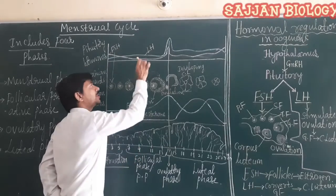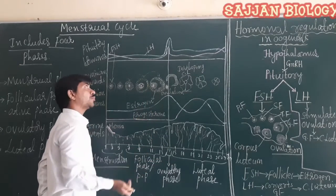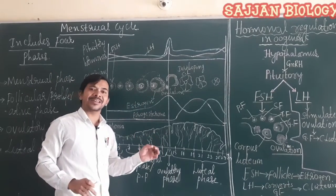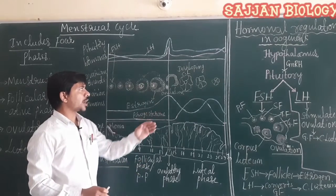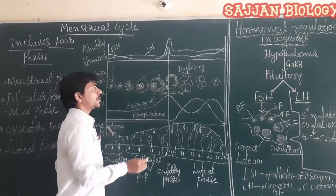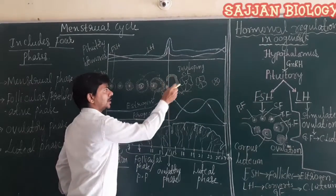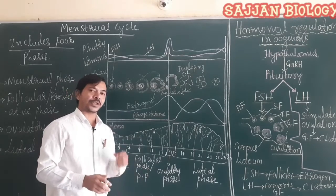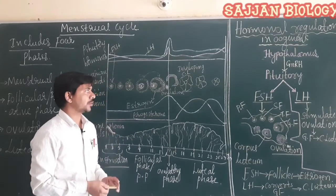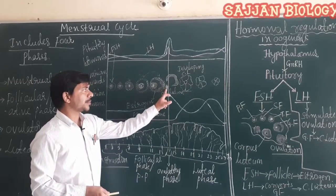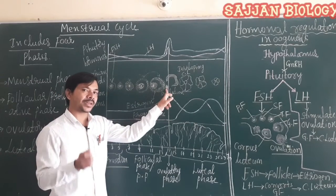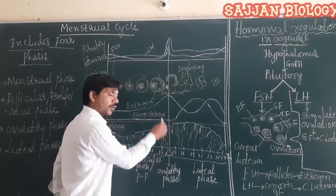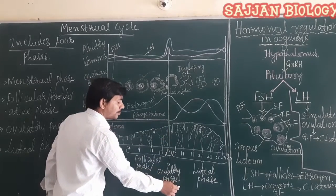FSH stimulates the increase in LH. LH hormone is secreted in greater amounts, leading to ovulation — the Graafian follicle ruptures and a secondary oocyte is released at mid-cycle, on the 14th day of the menstrual cycle. This is the ovulatory phase.